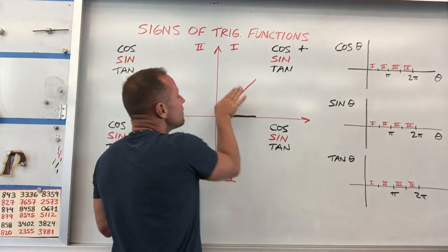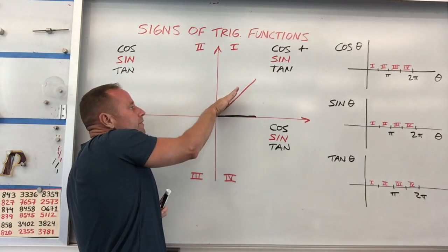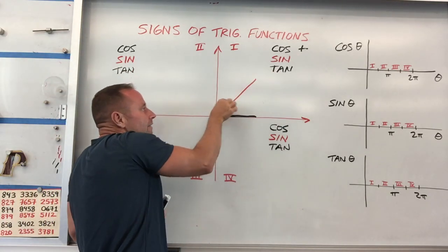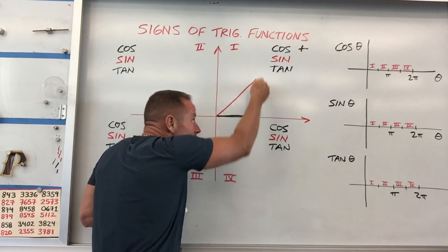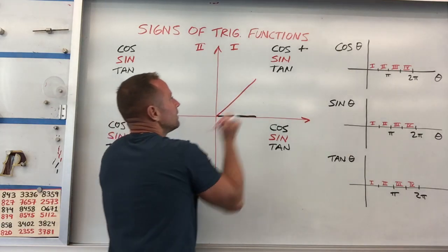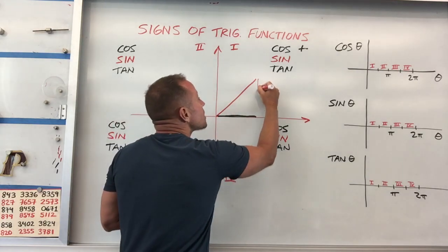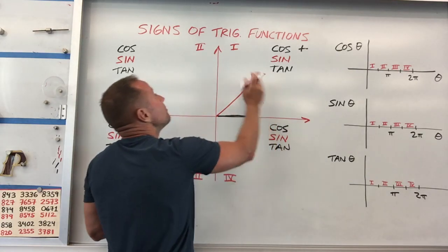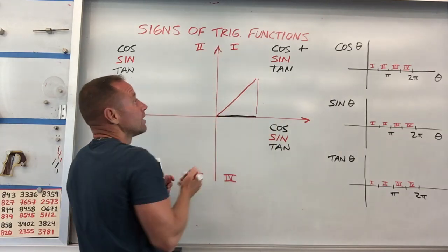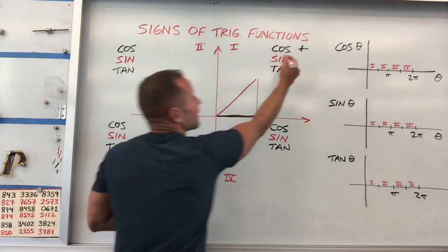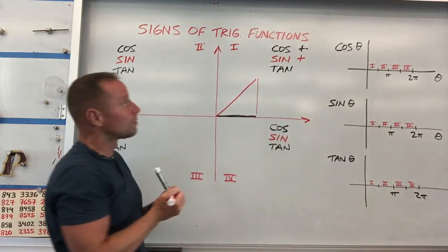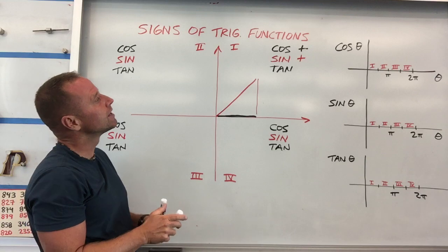Sine peels off the shadow that's on the opposite side of the known angle, so that's going to pull off this side. That's also going to be positive — it's pointing along the positive y direction. So cosine and sine are both positive.